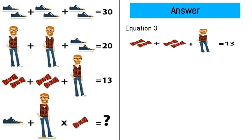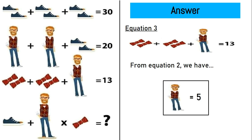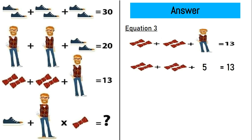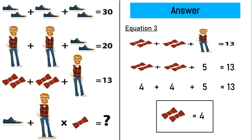Moving on to equation number 3, we have 2 ties plus 2 ties plus a man is equal to 13. From equation 2 we have a man is equal to 5. So 2 ties plus 2 ties plus 5 is equal to 13. That gives us 4 plus 4 plus 5 is equal to 13, so 2 ties is equal to 4.